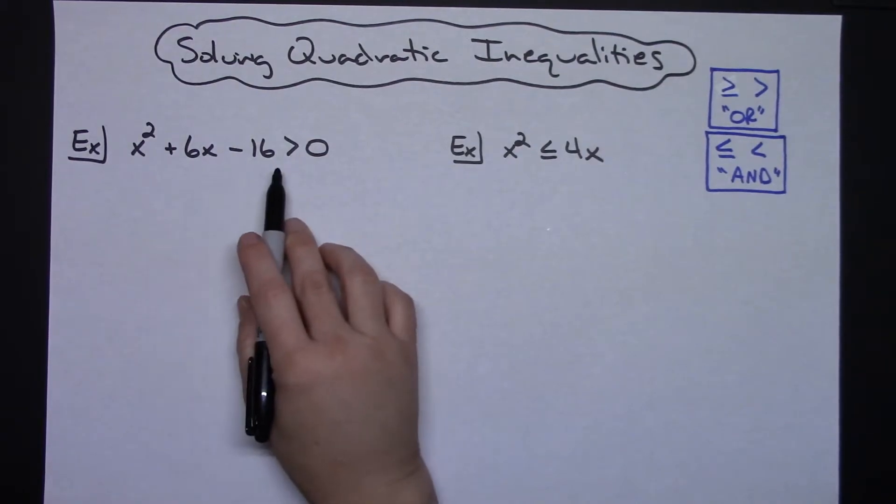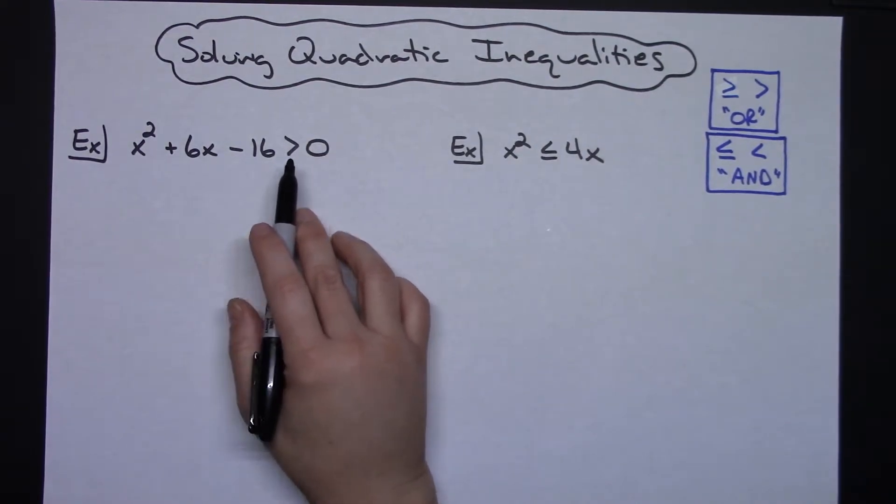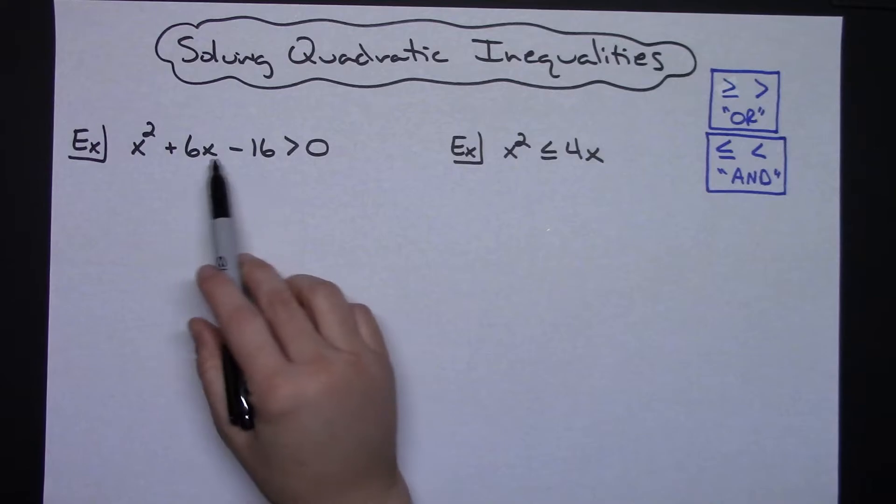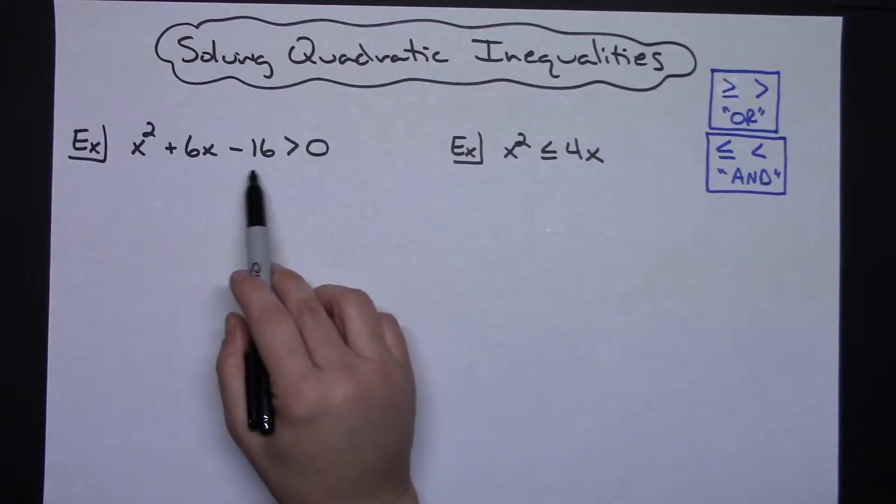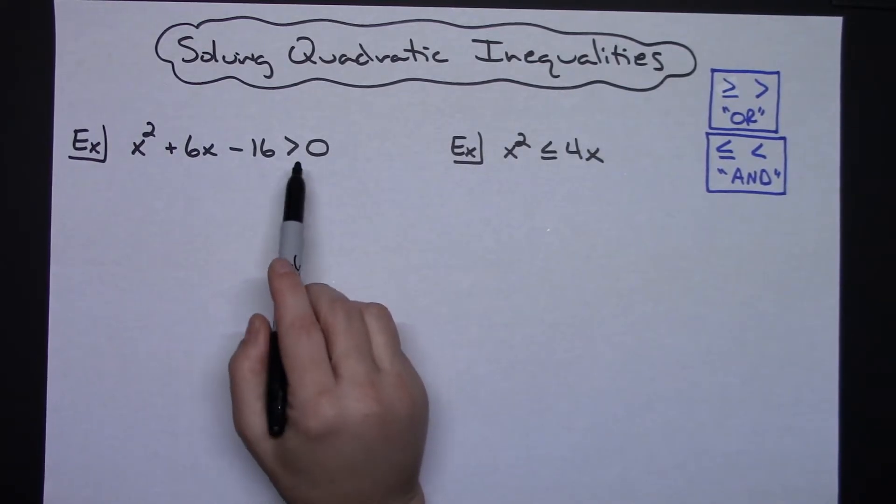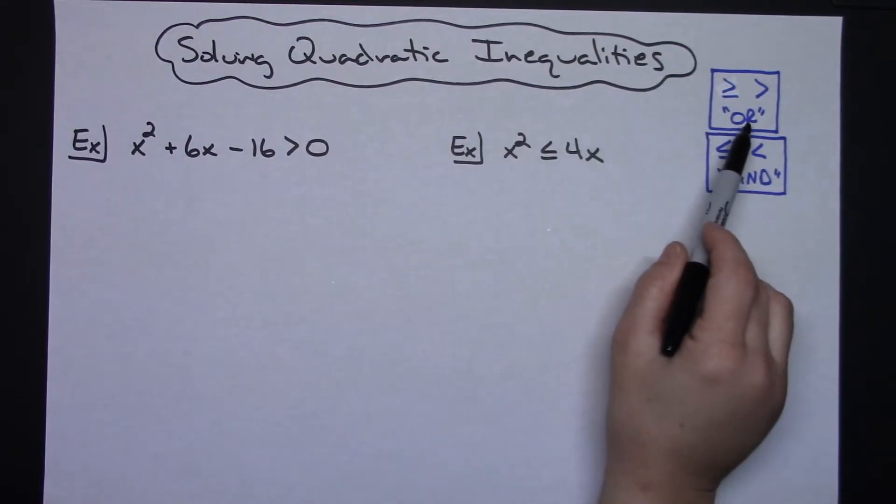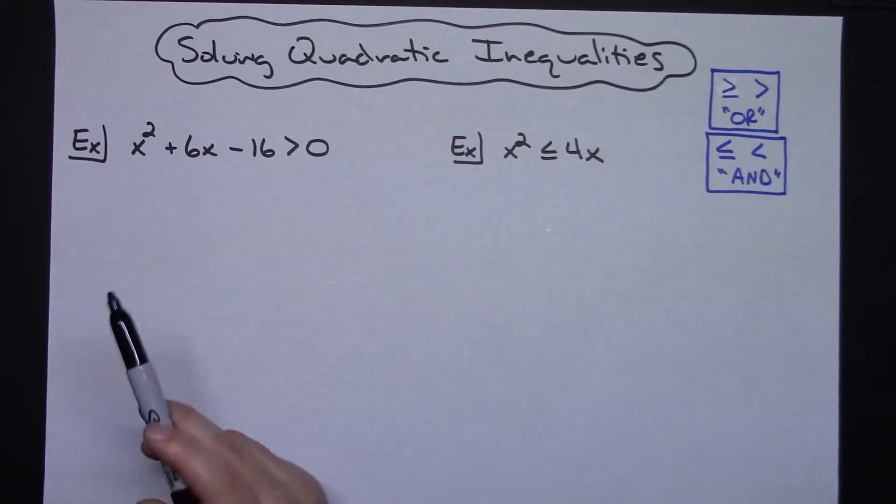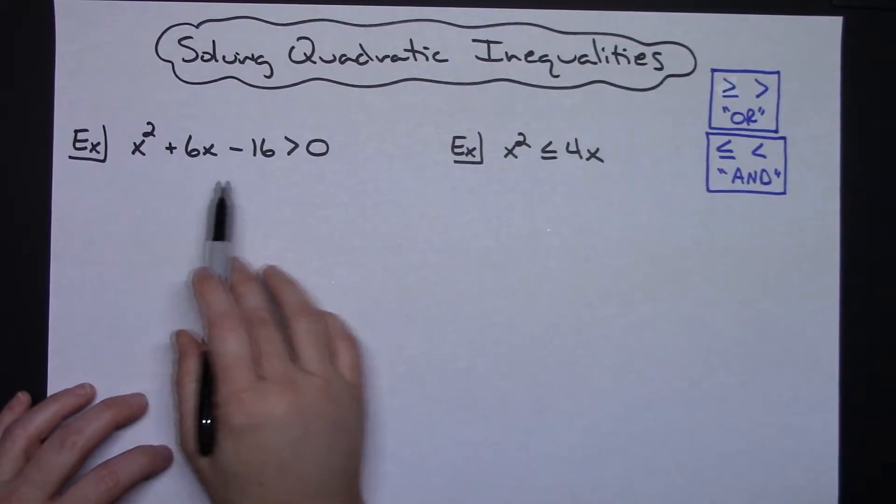First of all, I've got a quadratic here, x² + 6x - 16 > 0. It's greater than zero. So ultimately, I need to find out where is this quadratic greater than zero? I've got a greater than, so that means this is an OR inequality.